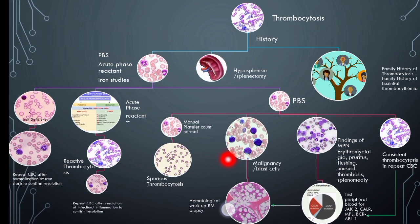If malignancy or blast cells are seen along with thrombocytosis on peripheral blood smear, consider bone marrow examination and flow cytometry for diagnosis of the underlying disorder. If features of myeloproliferative neoplasm are seen on the peripheral blood smear along with history of erythromelalgia, pruritus, flushing, unusual thrombosis, and splenomegaly on examination, then consider testing peripheral blood for JAK2, CALR, MPL, and BCR-ABL1 mutations.